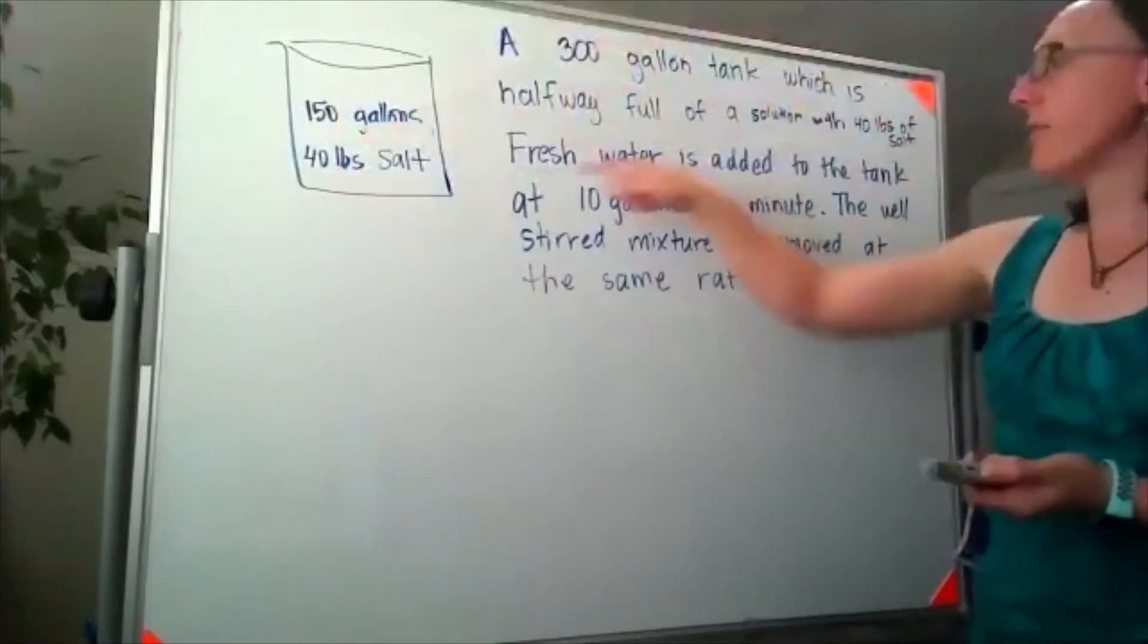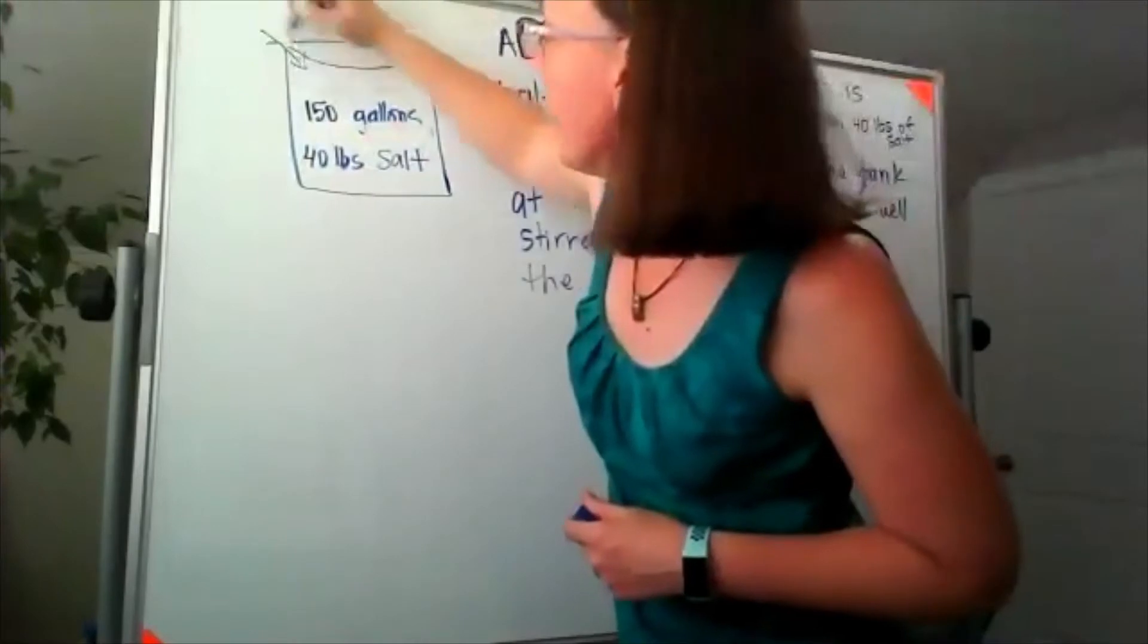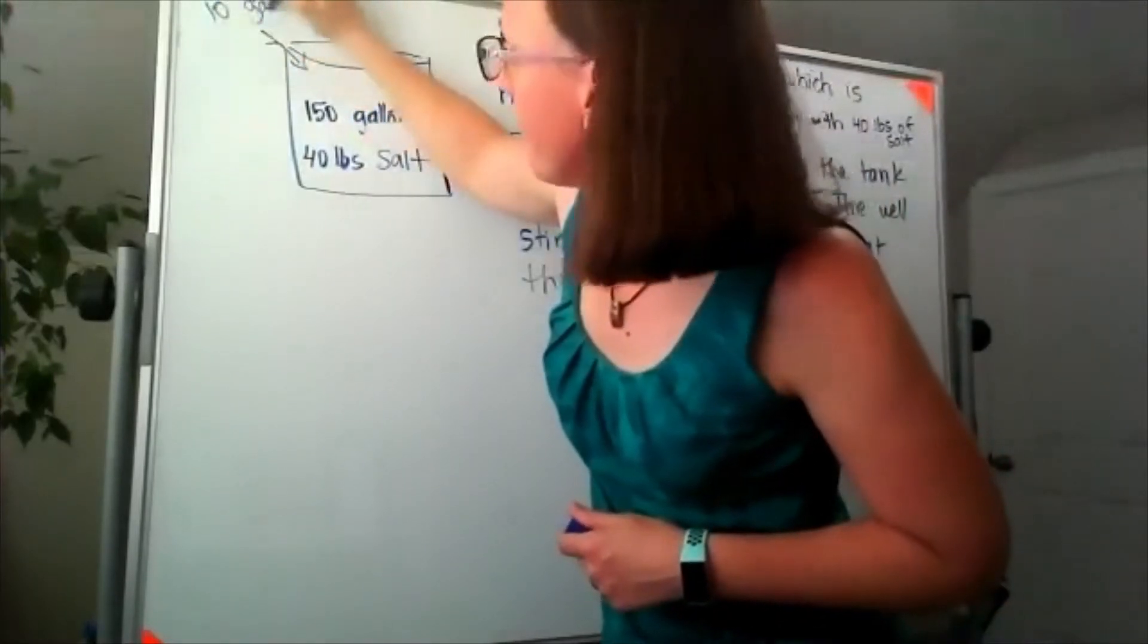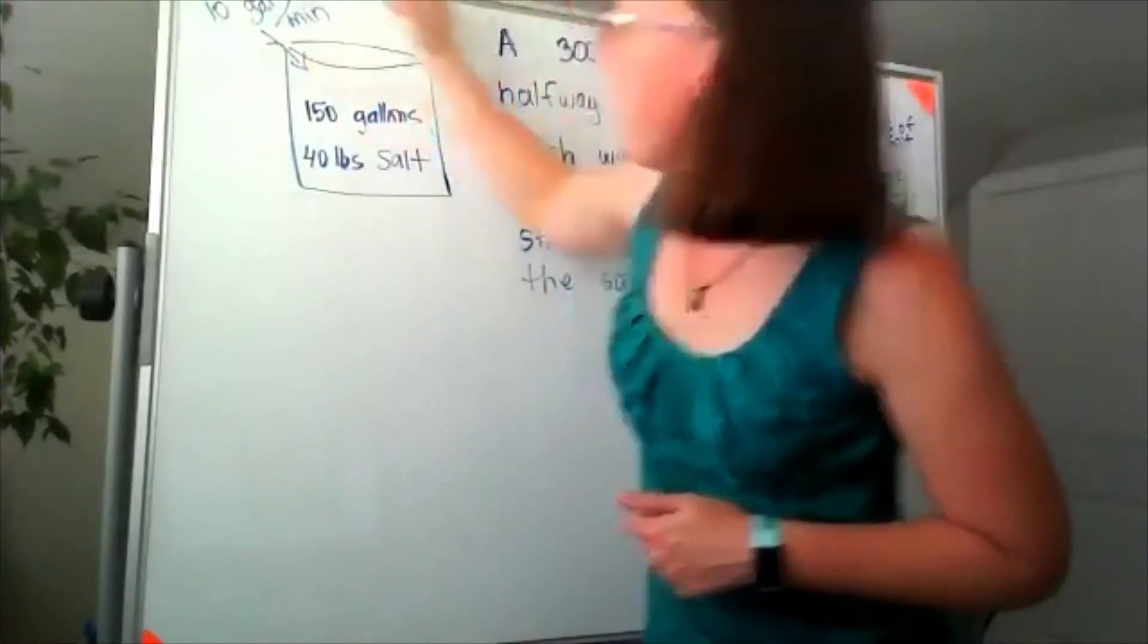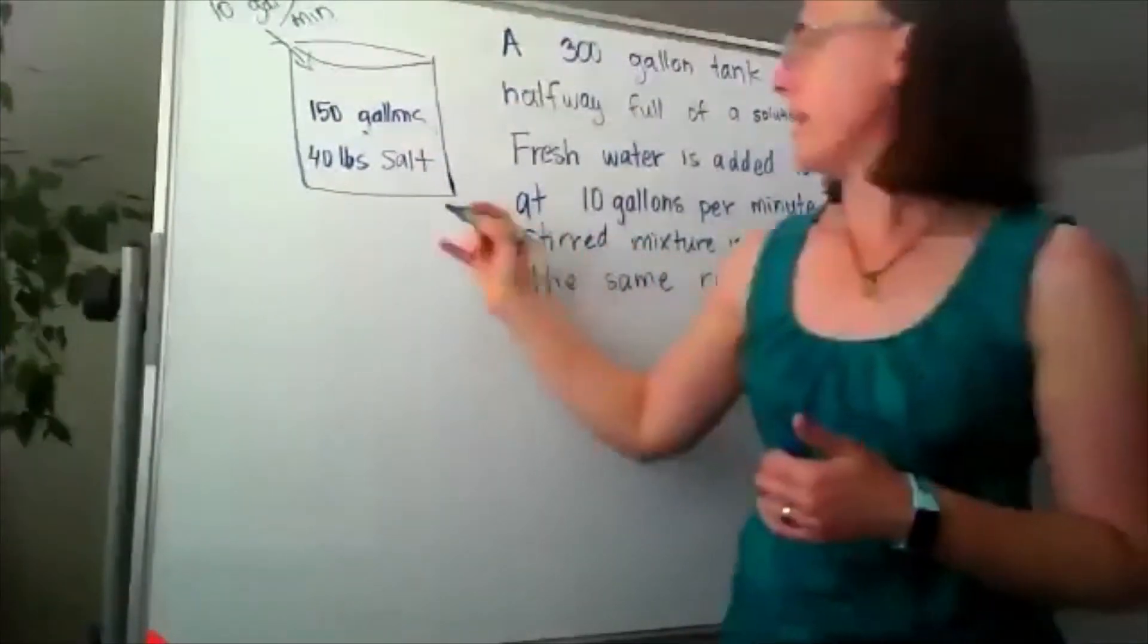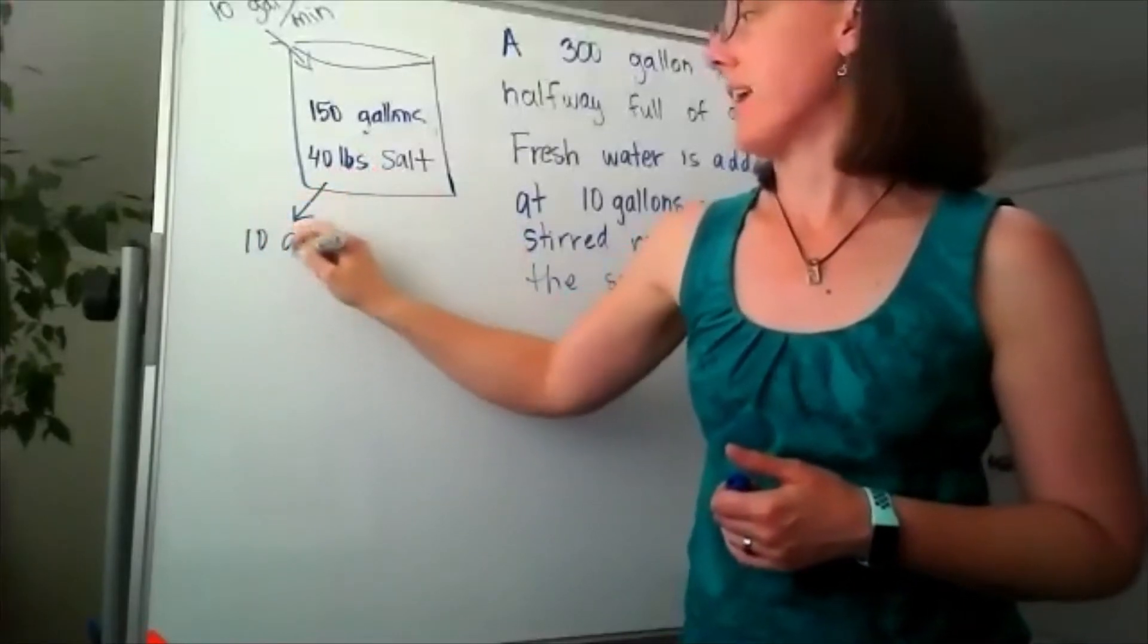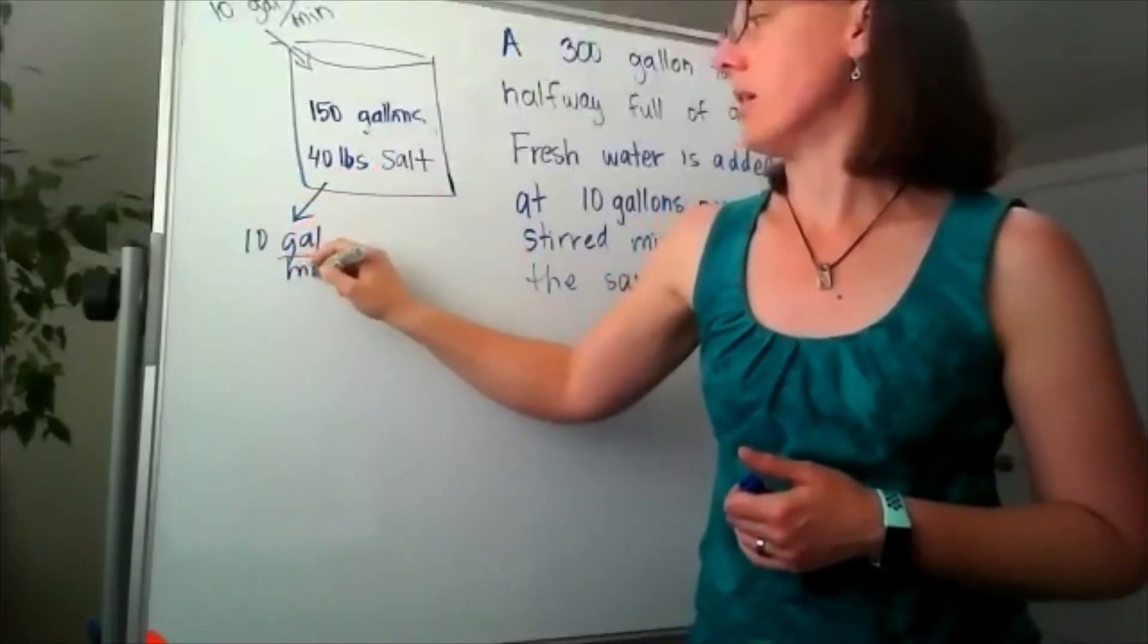Now we know that we've got fresh water added to the tank at 10 gallons per minute, and the well-stirred mixture is leaving the tank at the same rate, meaning it's leaving at 10 gallons per minute.